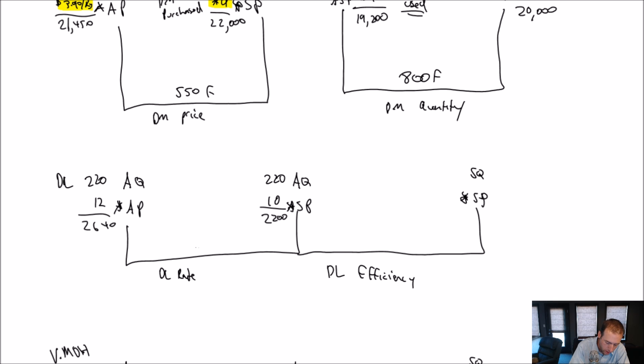My actual quantity, still 220. My standard price, what do I pay my employees? Well, according to my standards, I only pay them $10 an hour. I paid them way more than my standard. So, 220 times 10 is $2,200. The difference here is $440. Is this difference a good variance or a bad variance? Well, it's good for the employees, but it's bad for us. We paid them $2 an hour more than what we were planning. Again, the difference here is not the AQ. It's the price and the hourly rate that I paid my employees was higher. So, this is an unfavorable variance.